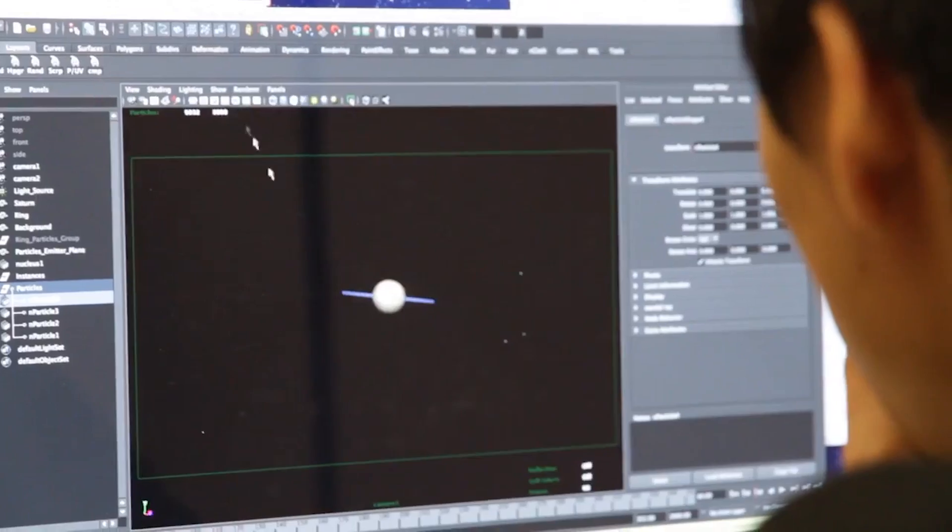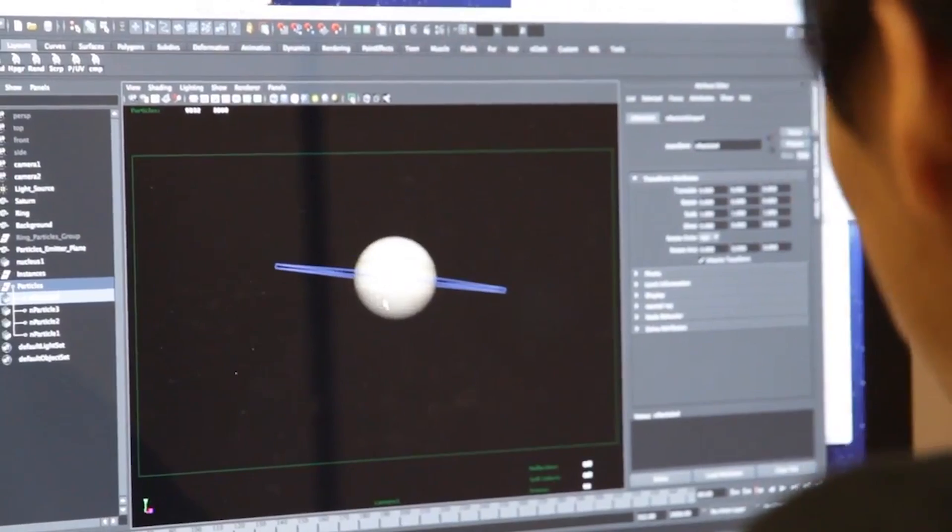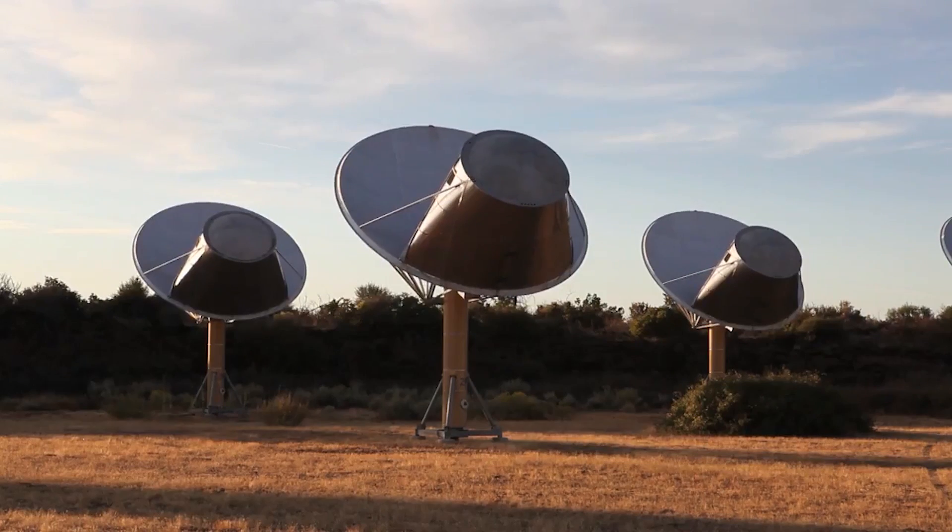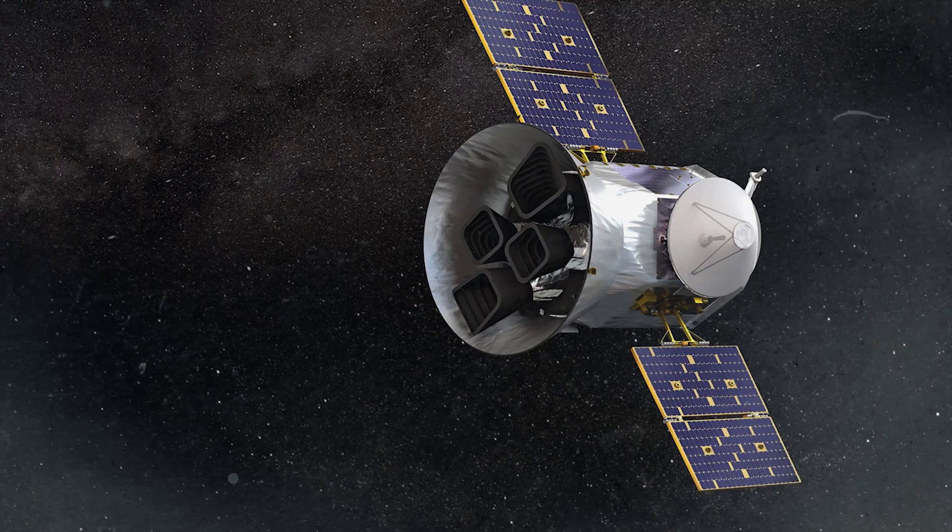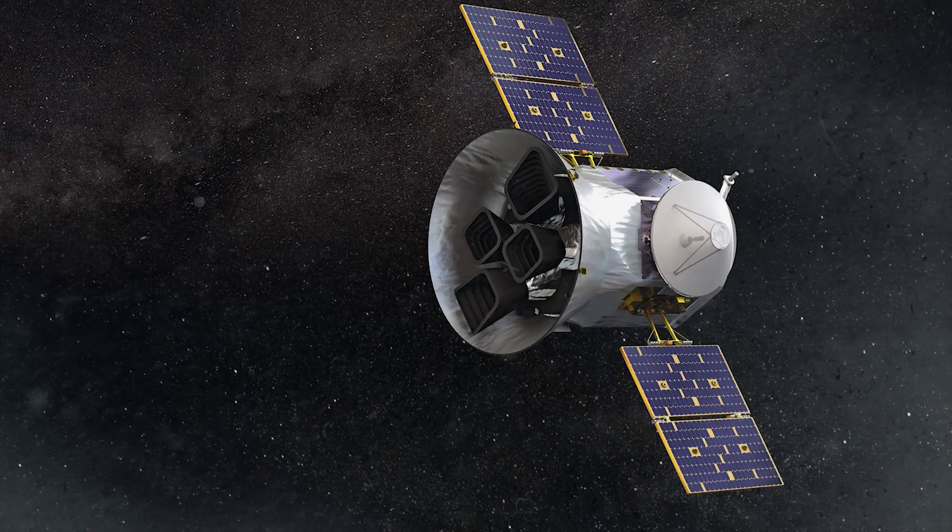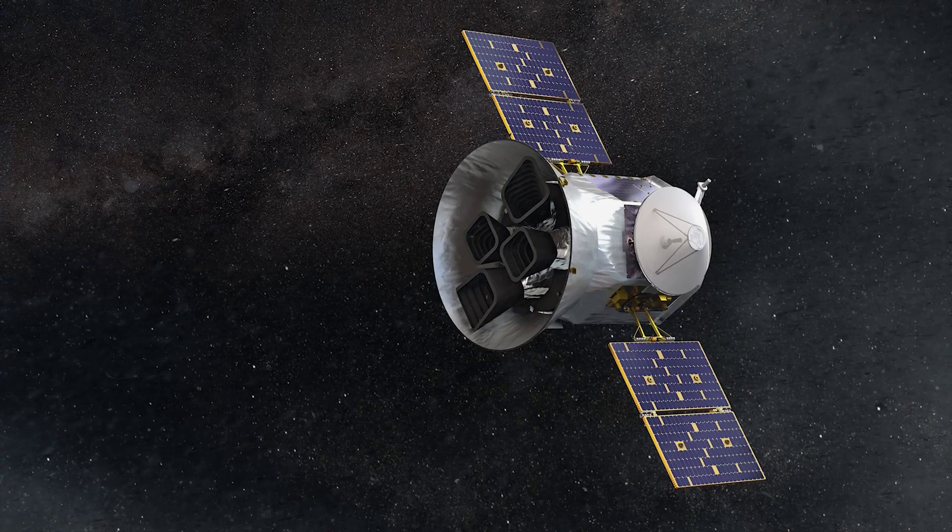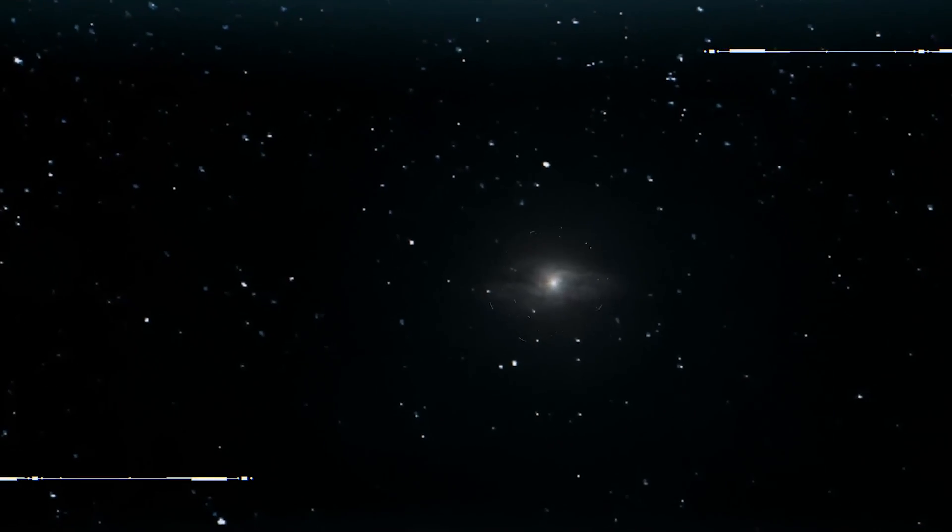They're convinced that the key to uncovering the truth about aliens might just be hidden in plain sight, within the data we've already collected. Giles and his team are now embarking on a mission to sift through the vast data collected by NASA's Transiting Exoplanet Survey satellite.